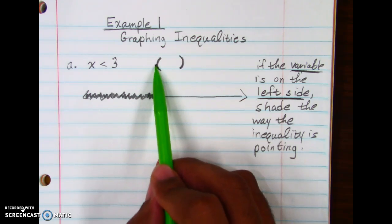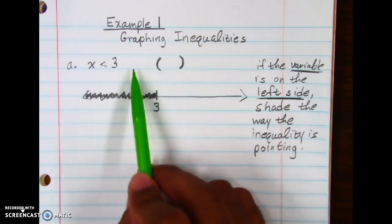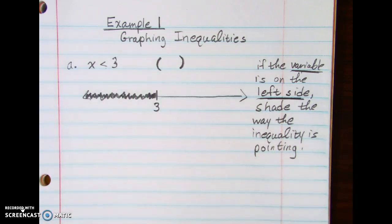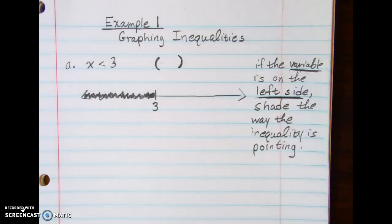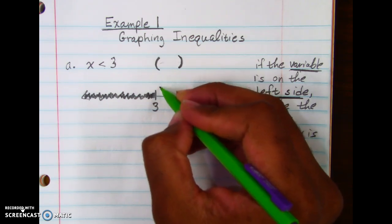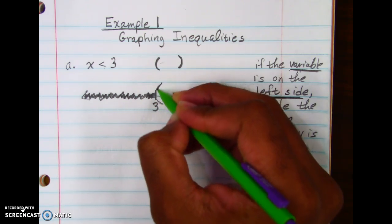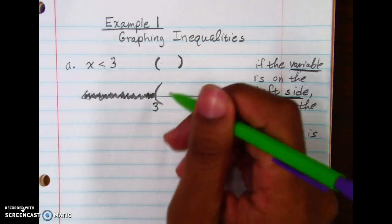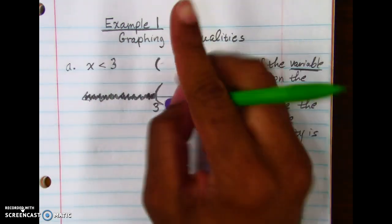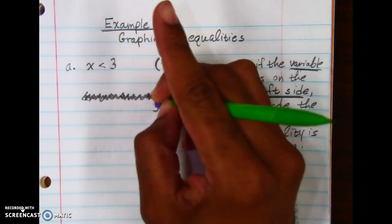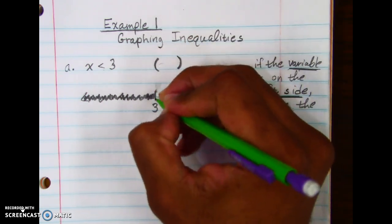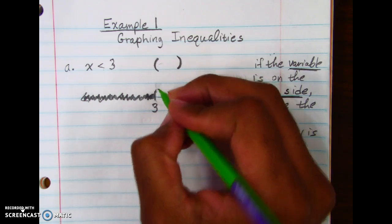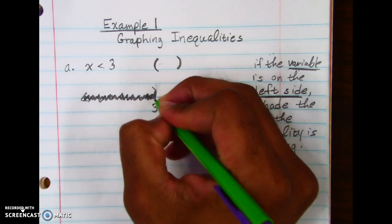Now look at the other direction — that's like hitting the back of the cup. If you tilt it the wrong way, water goes everywhere, gets your shoes wet, your clothes wet — you're going to look silly. So we don't want that. We're always going to shade inside of that cup, meaning the parenthesis or bracket always cups around the shaded part.